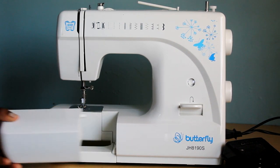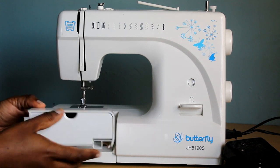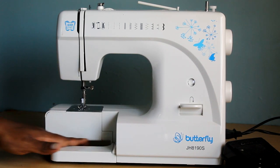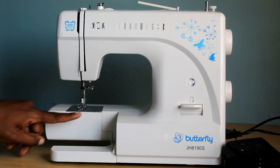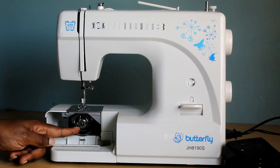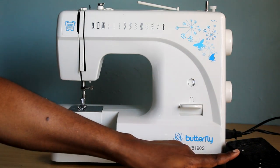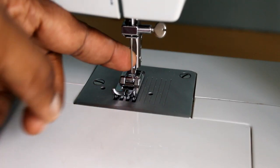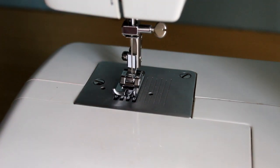You also have an accessories tray that you can remove. You can keep your little accessories in here and the bobbin. There's a free arm on this machine. Your bobbin is a side loading bobbin and it's underneath the needle plate here.